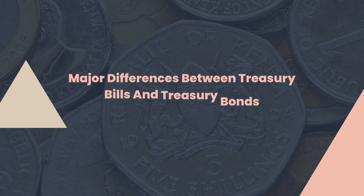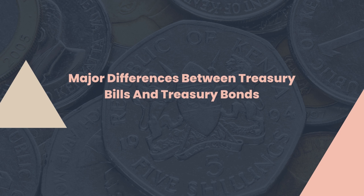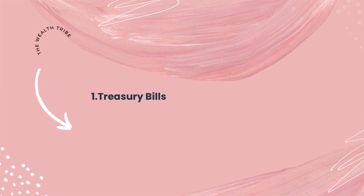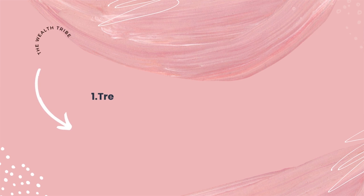What are the key differences between treasury bills and treasury bonds? Number one, treasury bills are usually short-term investments. For treasury bills, you invest for 91 days, 182 days, or 364 days — that is three months, six months, or a year. For treasury bonds, they are usually long-term investments, so you invest for five years and above.